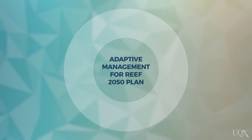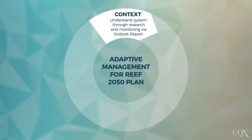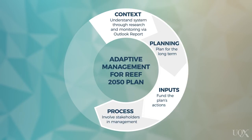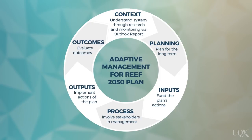Planning for the future is based on the results of monitoring and research. The current Reef 2050 Long Term Sustainability Plan includes using the International Union for the Conservation of Nature's Management Effectiveness Cycle with the steps of: Context — understand the system through research and monitoring via the Outlook report; Planning — plan for the long term; Inputs — fund the plan's actions; Process — involve stakeholders in management; Outputs — implement the actions of the plan; Outcomes — evaluate outcomes; and go back into review and planning again.